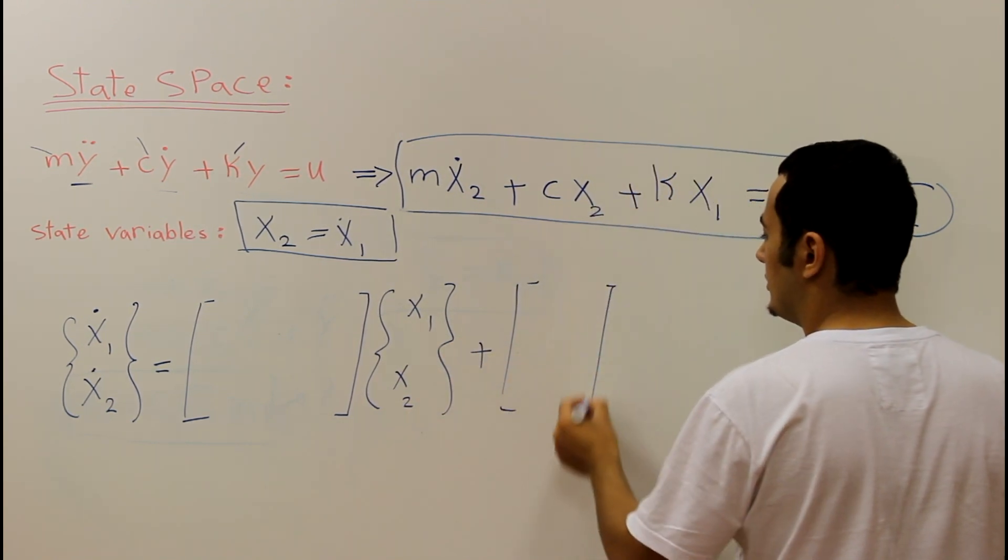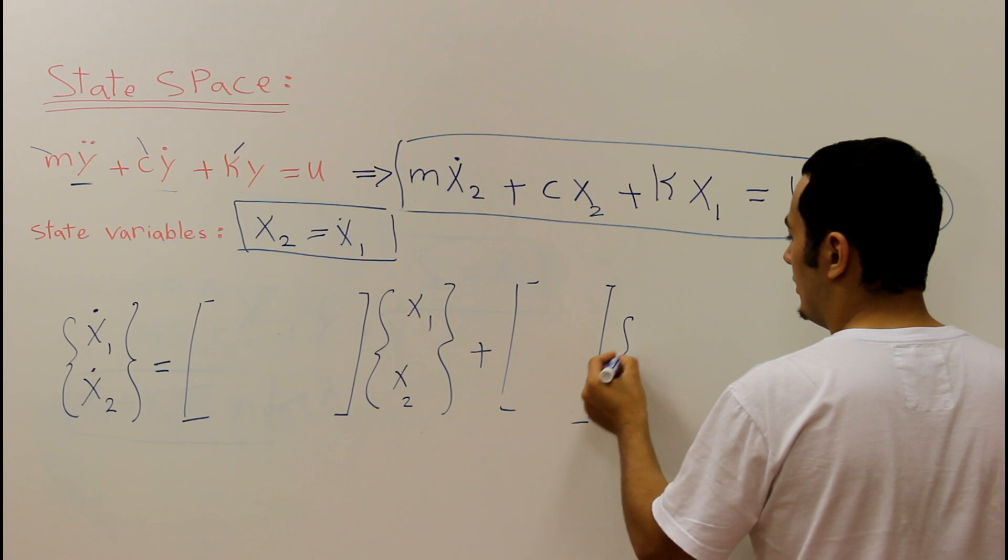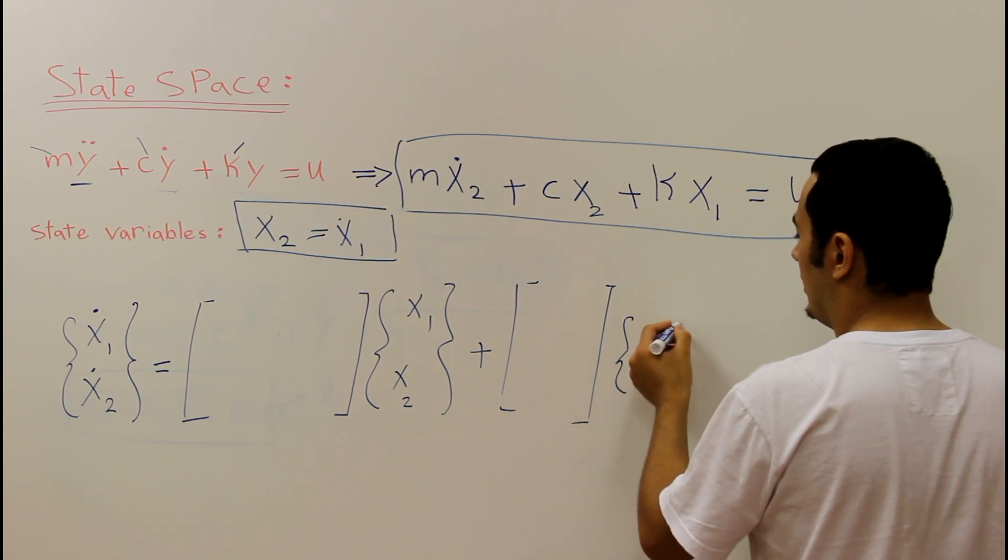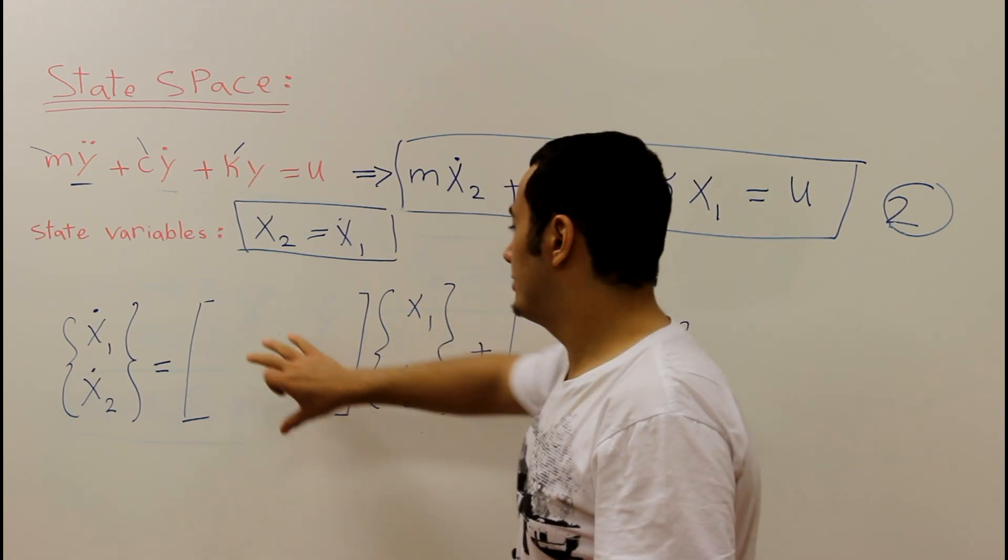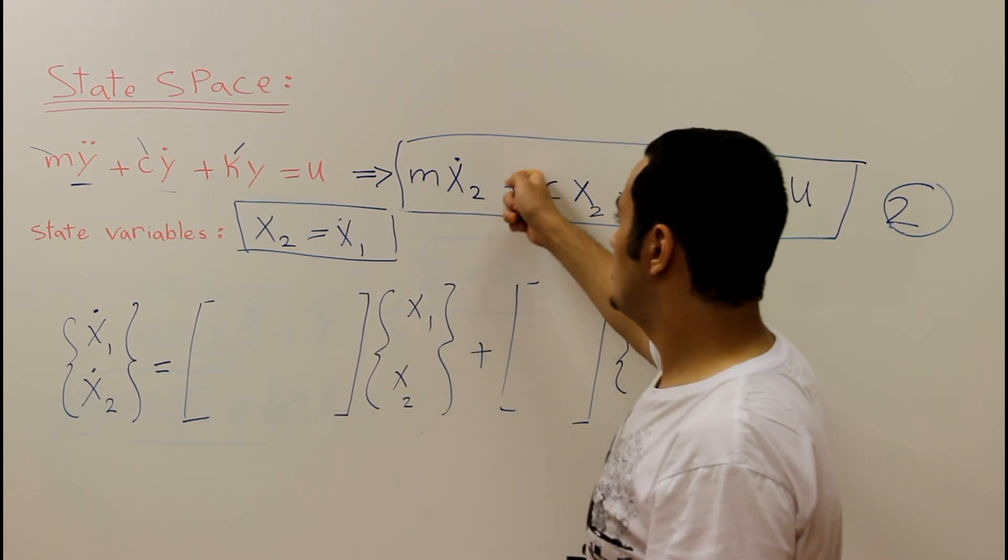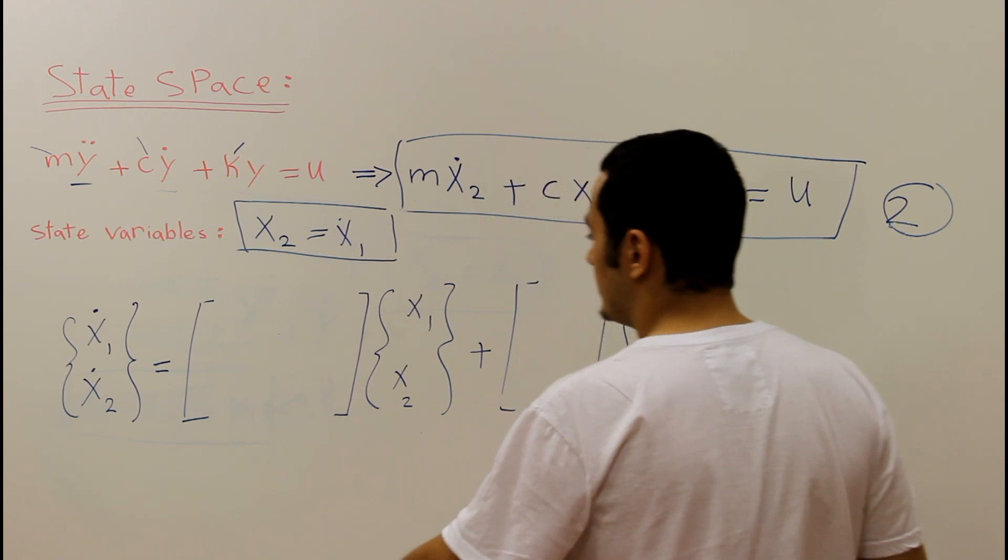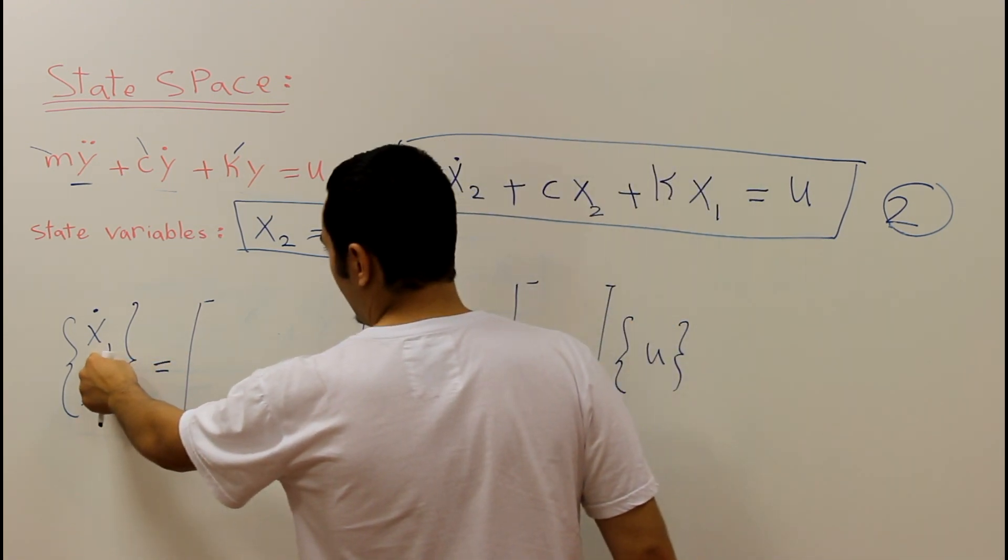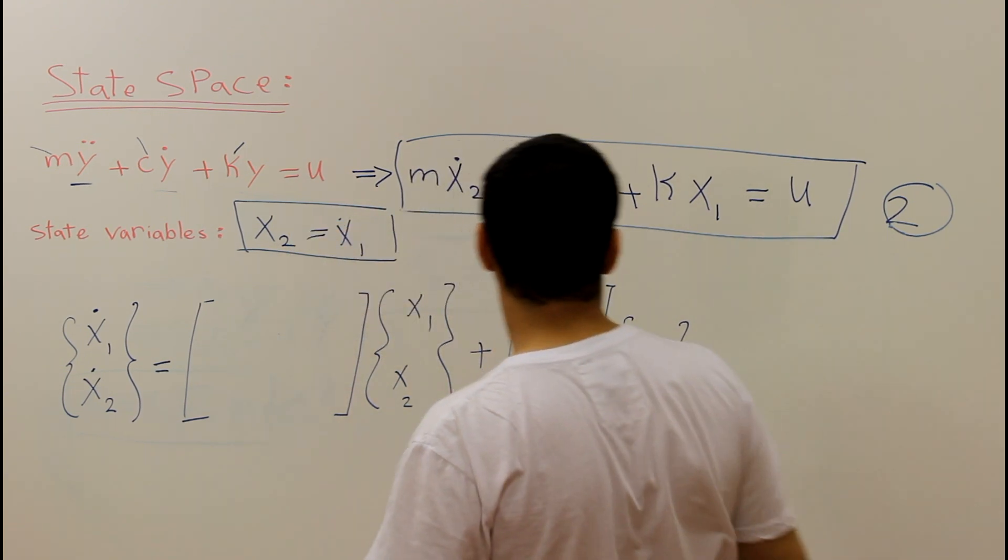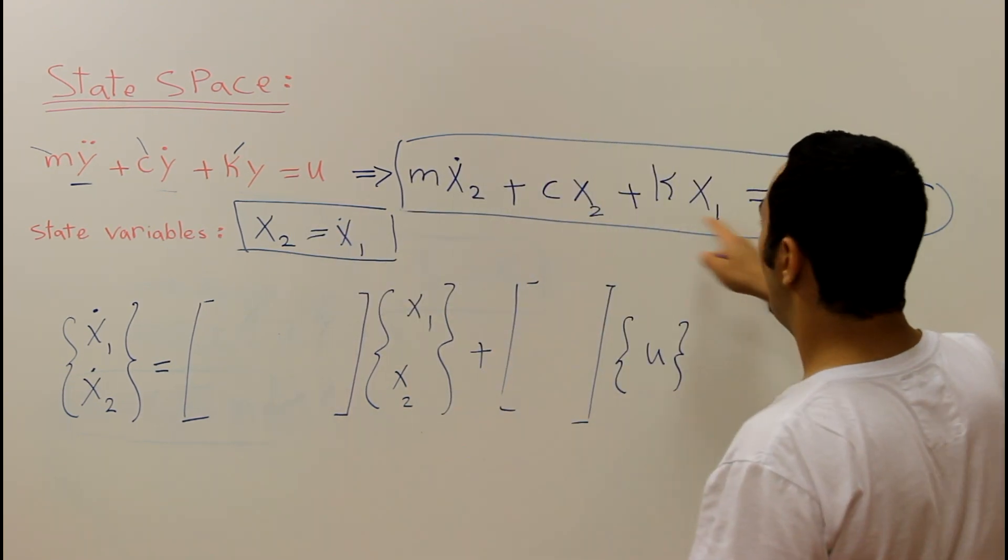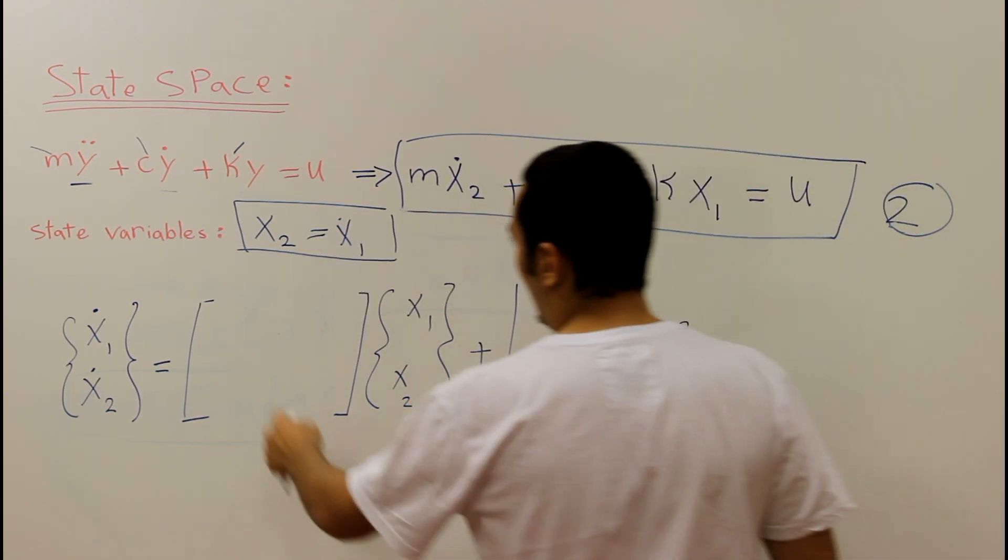plus this multiplied by u. Right now we will fill our matrices by using these two equations. If we look at the first equation x1 dot, x1 dot equal x2, we don't have any x1 dot here and in this space we have four spaces: one, two, three, four.